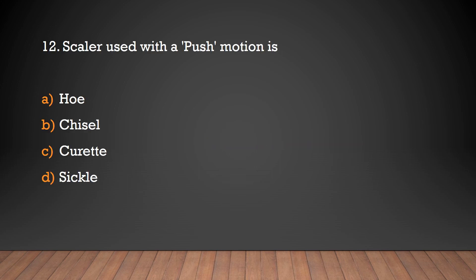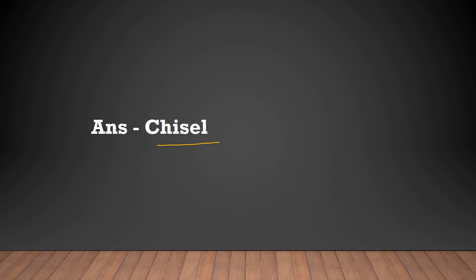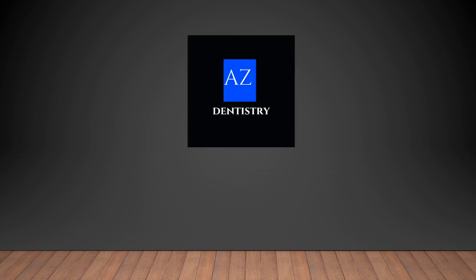The scaler used with a push motion is: hoe, chisel, curette, or sickle? The answer is chisel — chisel is used with a push motion. That covers the topic of periodontal instruments. See you with a new video, thank you.